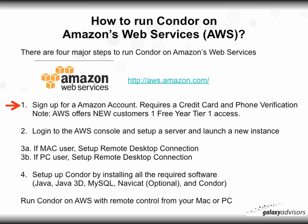The second step is to log in to the Amazon Web Services console, set up a server, and launch a new instance, which will be covered in a separate video. Then, depending on whether you're a Mac or PC user, I'll explain how to set up the remote desktop connection. The fourth and final part is to set up Condor by installing all the required software: Java, Java 3D, MySQL, NaviCat (which is optional), and Condor. Then you're ready to run Condor on Amazon Web Services with remote control from your Mac or PC.